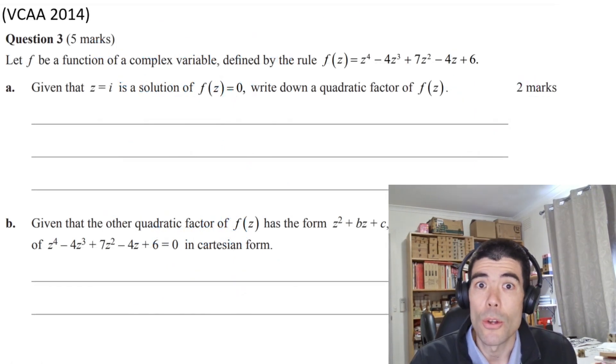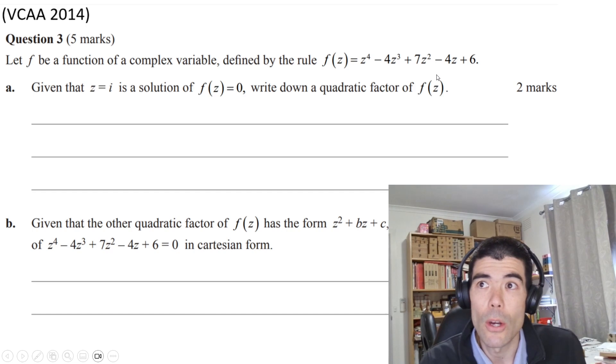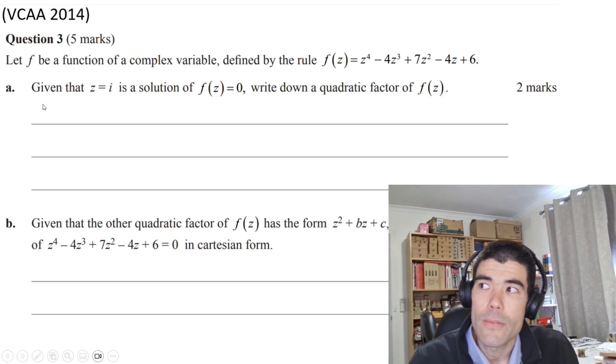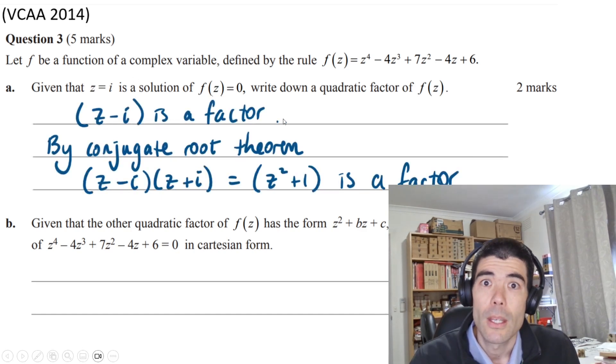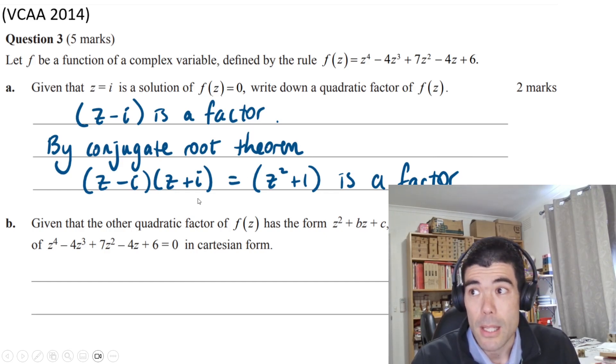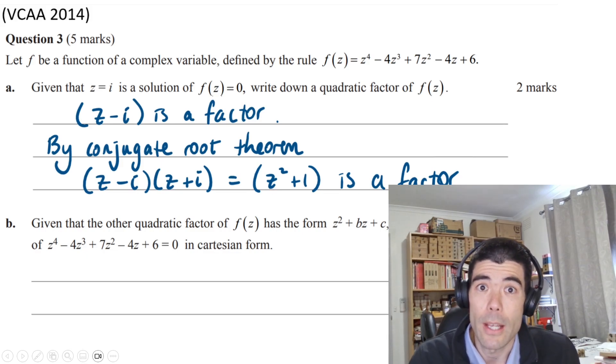The other type question is the conjugate root theorem, where we have a polynomial with real coefficients. In this case, we'll get the solutions occurring in conjugate pairs. Very standard first question: given one solution, find one more solution, or in this case, write down a quadratic factor. If z equals i is a solution, that means z minus i is a factor. Be careful of the wording and the difference between a solution and a factor. By the conjugate root theorem, z plus i is also a factor. Multiplying those out, we get z² + 1 as our quadratic factor.